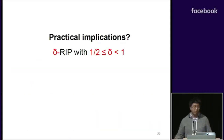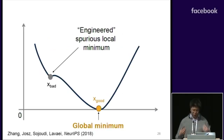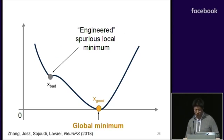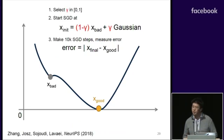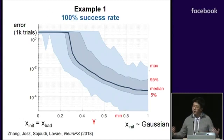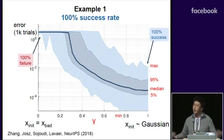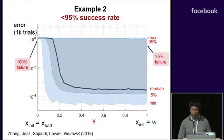What does all this theory mean for a practical recommendation system? To answer this question, we engineered an example that purposely contained a spurious local minimum, and we started stochastic gradient descent at the spurious local minimum, taking it further and further away from that point. We discovered that in many examples, if you started from the spurious local minimum you get 100% failure, but if you started from a random point, you always succeed. The problem contains the spurious local minimum, but it doesn't seem to matter.